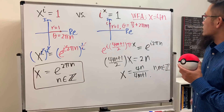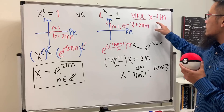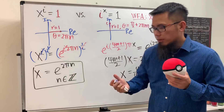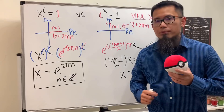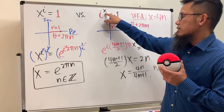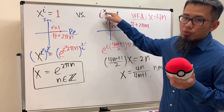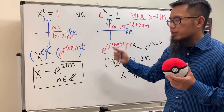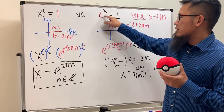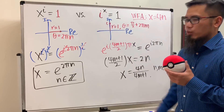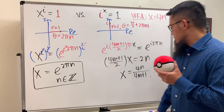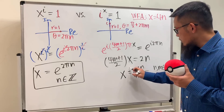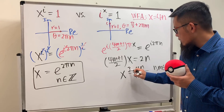But wait — what's up with Wolfram Alpha? Wolfram Alpha is only telling me x equals 4n, the multiples of 4. If you plug in x = 4, i to the fourth is of course equal to 1. I agree. i to the eighth is also equal to 1. But how can we end up with this formula? Is this legitimate? What do you guys think?